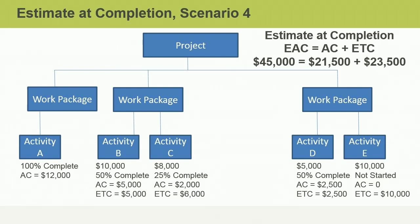In summary, an estimate at completion, or EAC, is a new budget forecast based on what we have learned and experienced with our project to date. We have covered the remaining two of the four possible scenarios for determining the EAC.